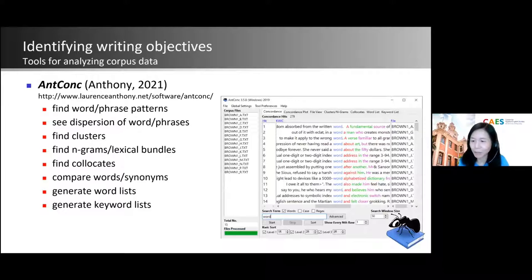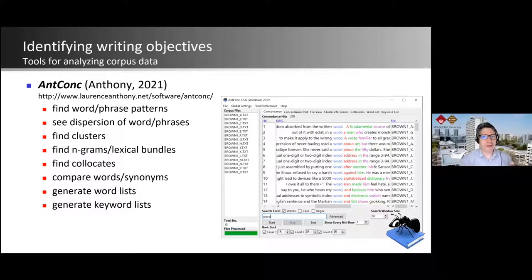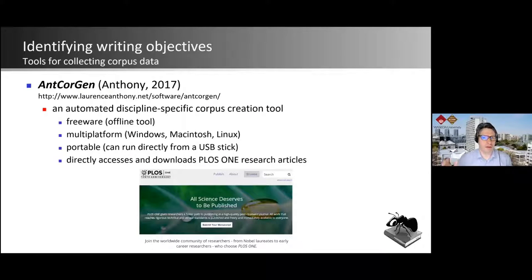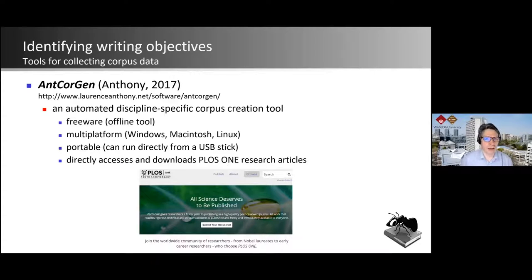There's a question: are all concordances from student papers? I just demonstrated professional writing — the students brought PDF files of professional writing from their supervisor or course readings. AntCorpGen also downloads from professional journals. What you could do is compare professional writing and student writing to see if there are differences — for example, maybe students use 'but' at the beginning of sentences while professional writing never does. Then you can show students the difference in style.